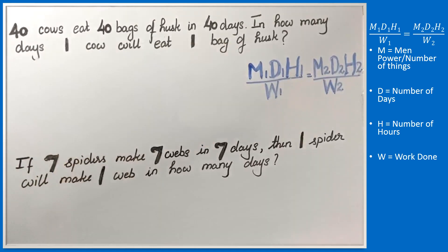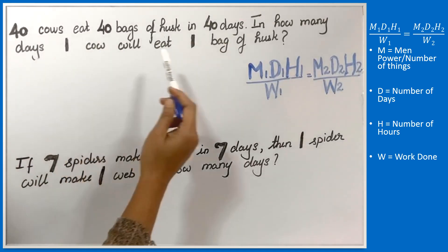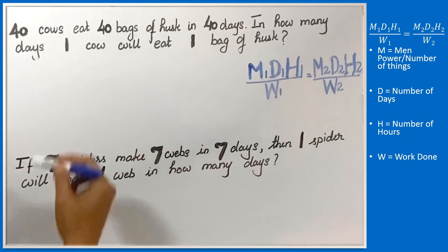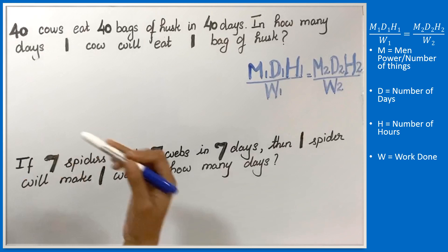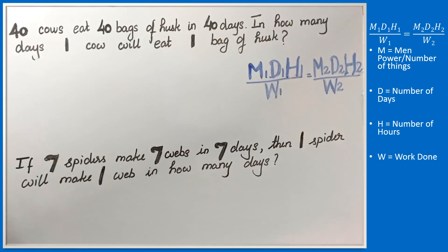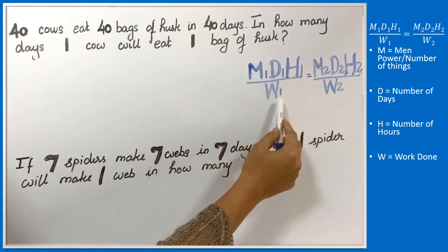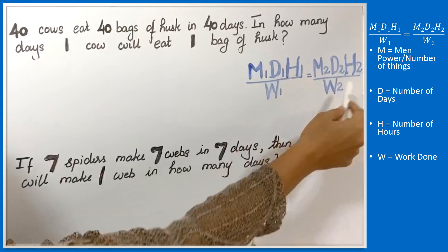40 cows eat 40 bags of husk in 40 days. In how many days will 1 cow eat 1 bag of husk? You can see a similar one: 7 spiders make 7 webs in 7 days, then 1 spider will make 1 web in how many days? These questions are called chains. The formula is M1*D1*H1/W1 = M2*D2*H2/W2.